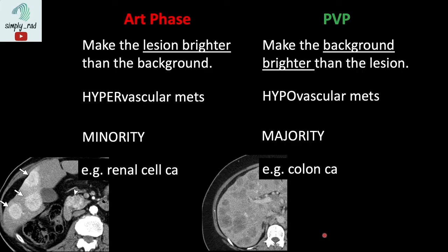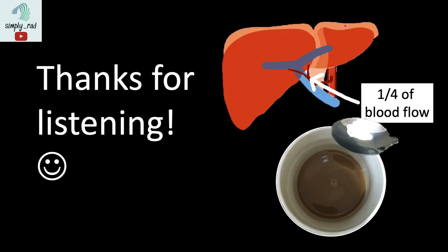In summary, to make a metastasis easier to spot, we either make the lesion brighter than the background or make the background brighter than the lesion. The phase to use depends on what type of metastasis is being evaluated. If it's a hypervascular metastasis such as renal cell carcinoma, it's best to use the arterial phase. If the primary malignancy is known to produce hypovascular metastases, then it's best to use the portal venous phase. That's it for today. Thank you very much for listening and I hope to see you next time.